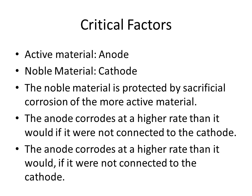The active material becomes the anode and the noble material becomes the cathode when the suitable conditions are met. The noble material is protected by the sacrificial corrosion of the more active material, meaning the anode disappears over time while the cathode is protected. The anode corrodes at a higher rate than it would if it were not connected to the cathode — when connected to a cathode, it corrodes more.